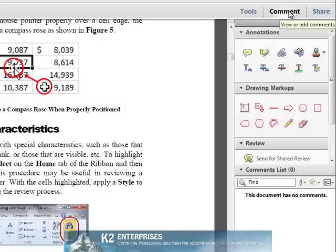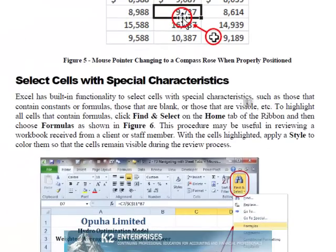you can easily select from the different types of markups and edits you would like to add to the document. Two of the more popular options are the Highlight Text tool and the Add Sticky Note tool. To use the Highlight Text tool, simply click the Highlight Text tool icon in the Comment pane, and then click and drag the text in the document you wish to highlight.